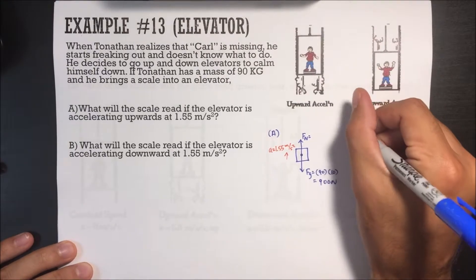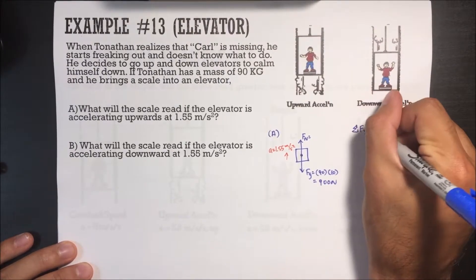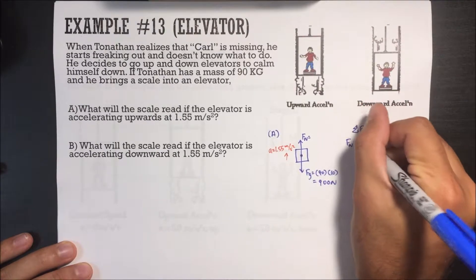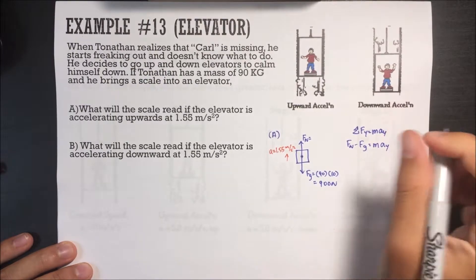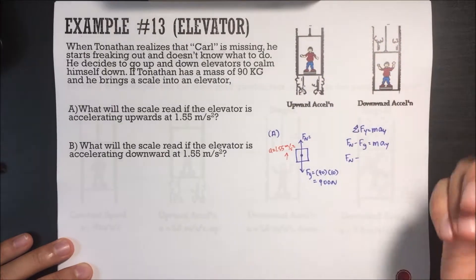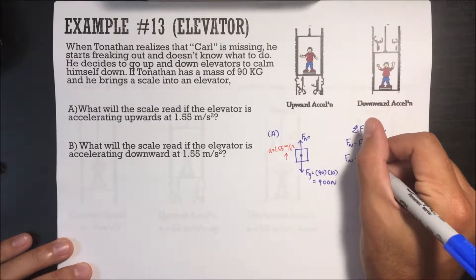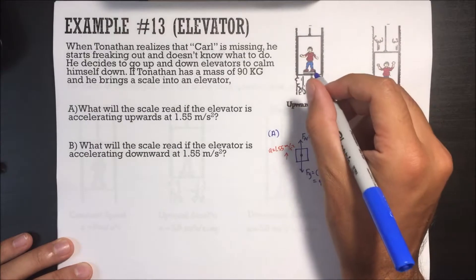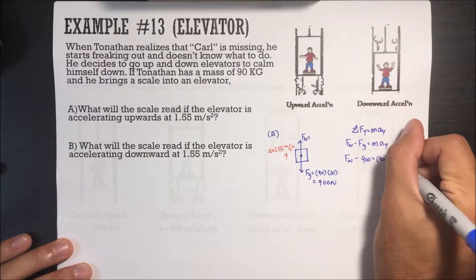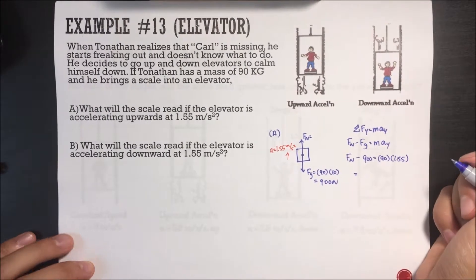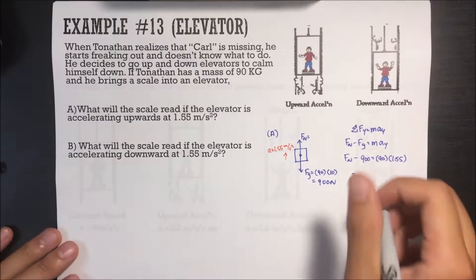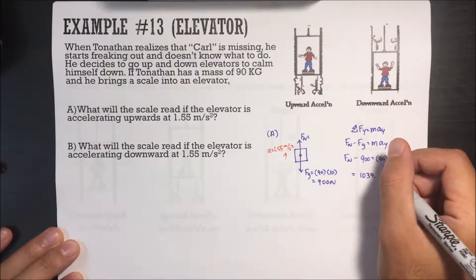We're going to use: sum of all forces in the Y equals mass times acceleration in the Y. We have two forces: normal force minus force of gravity equals mass times acceleration in Y. Normal force is what we're looking for — that's how heavy you feel. Minus force of gravity, which is 900. Mass of Toniton is 90, and the acceleration is 1.55. Doing the math, we get that it's equal to 1039.5 newtons.